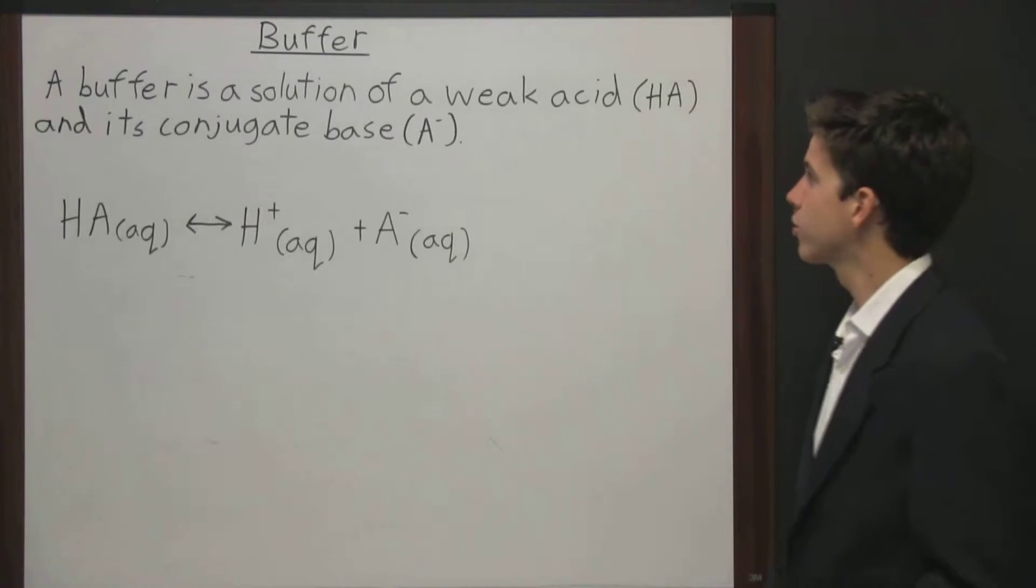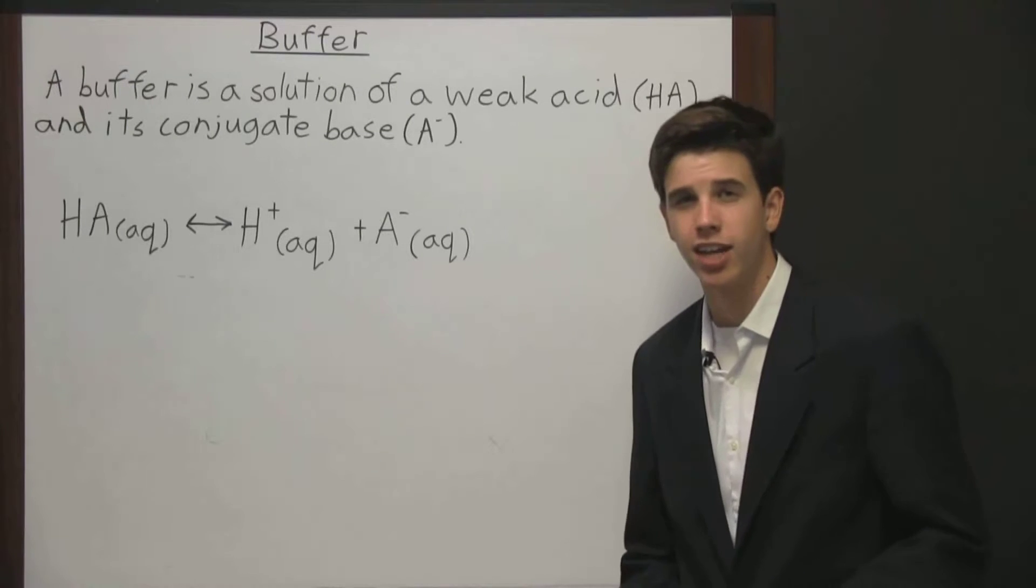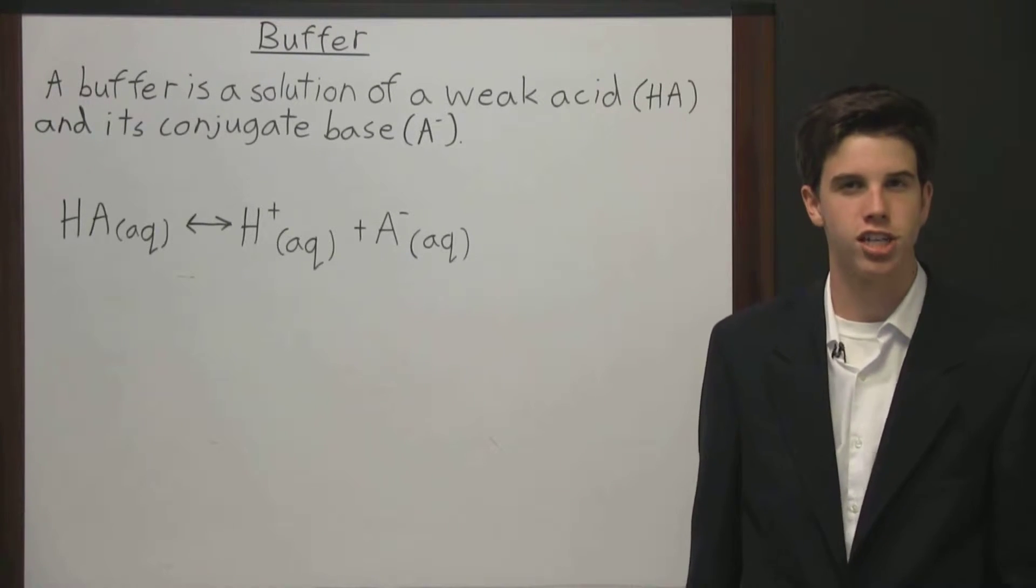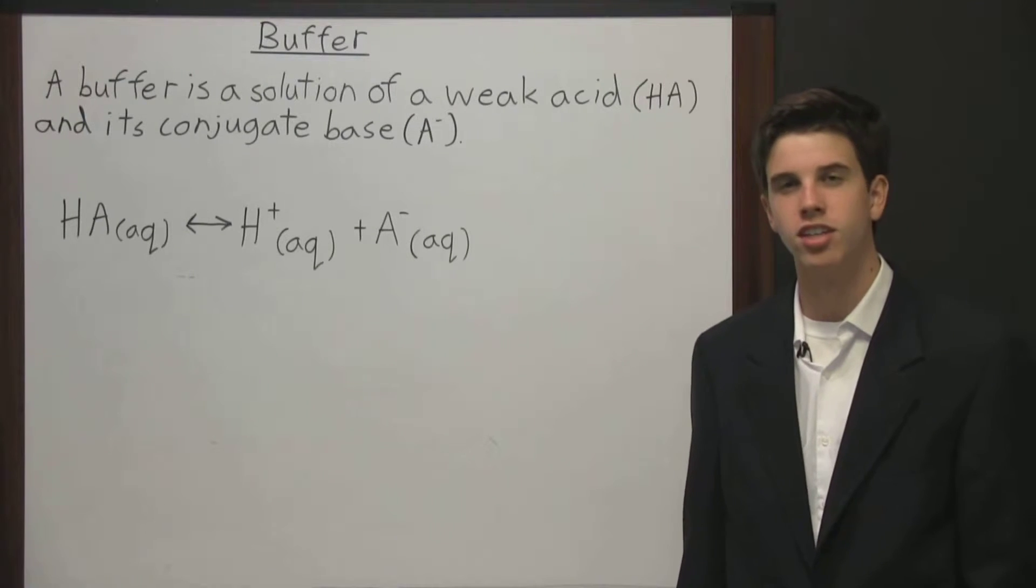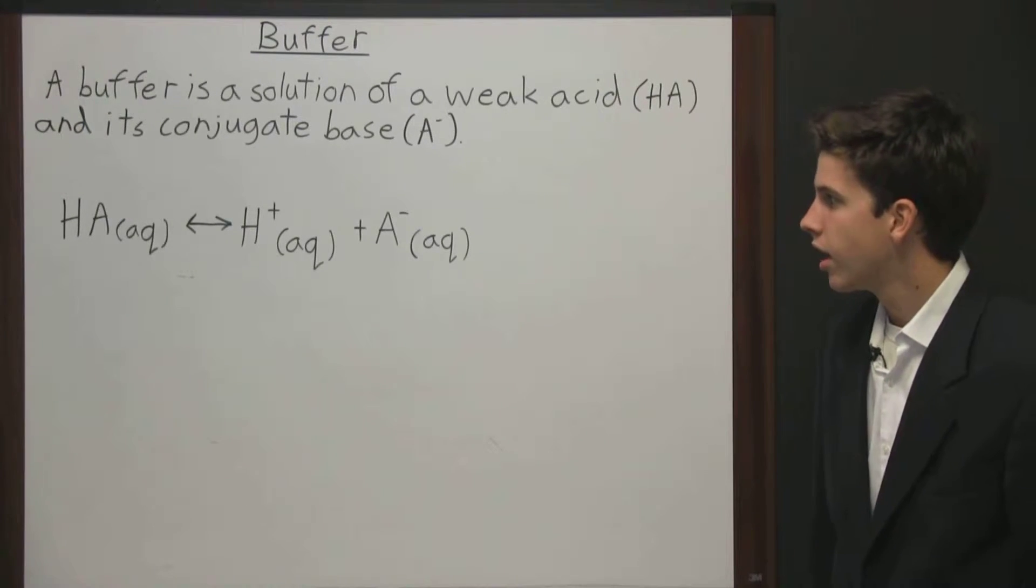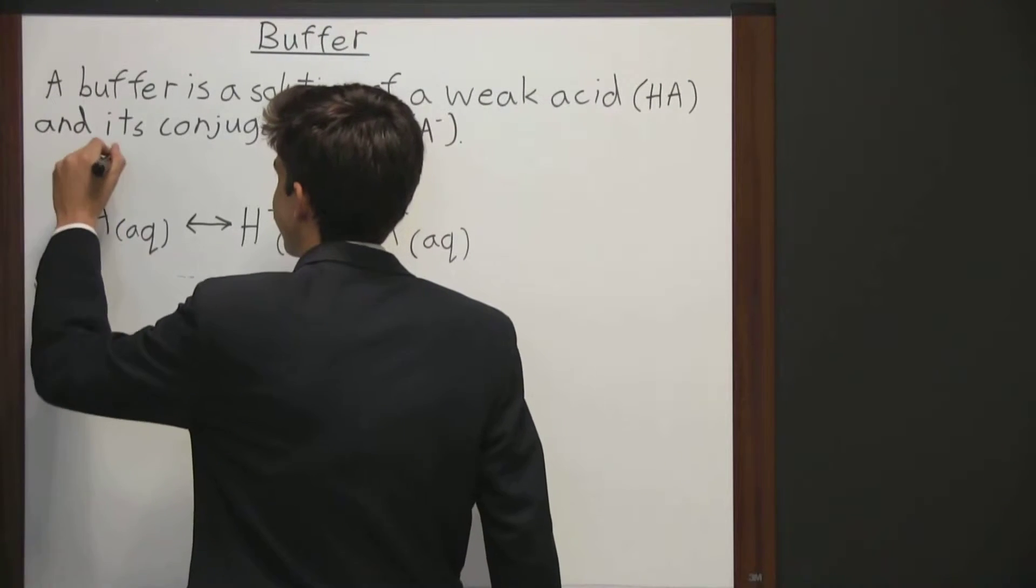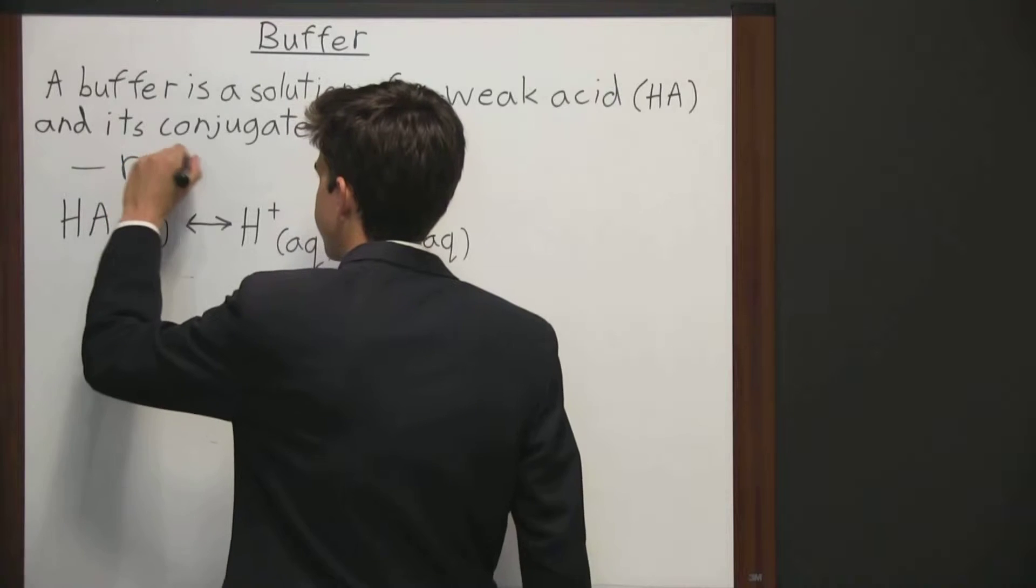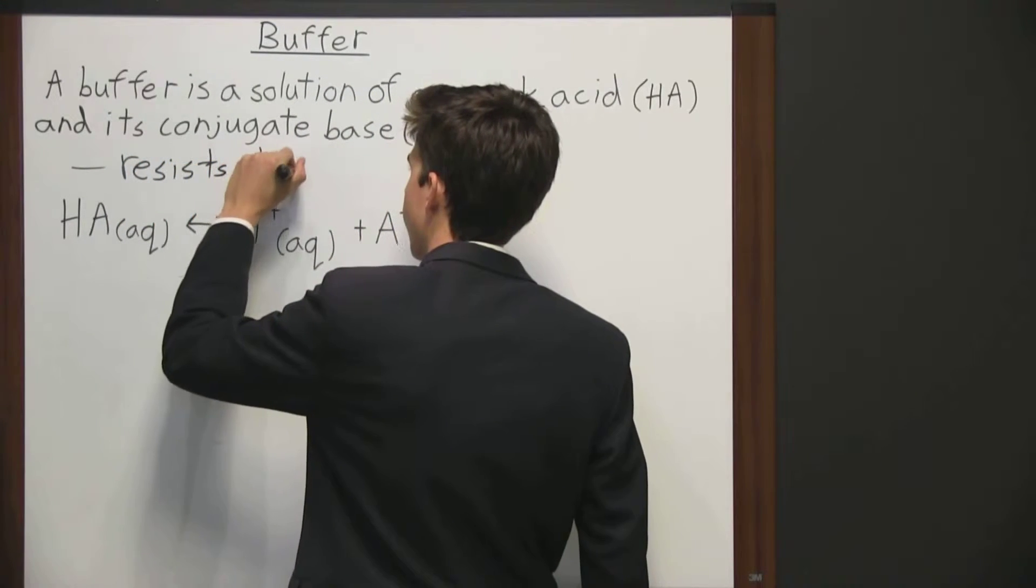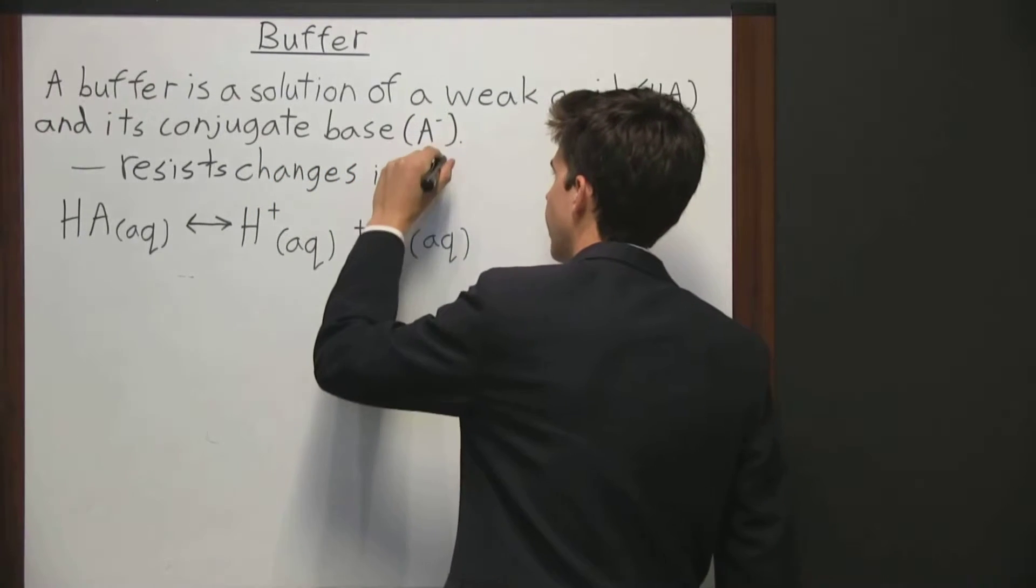A buffer is a solution of a weak acid and its conjugate base. It is useful for reducing changes in the hydrogen ion concentration of a solution when additional hydrogen ions are removed or added, and so that means it resists changes in pH.